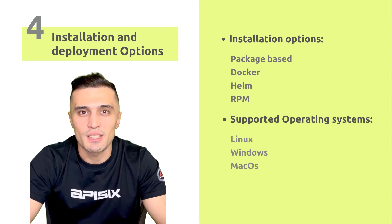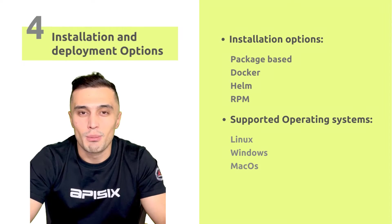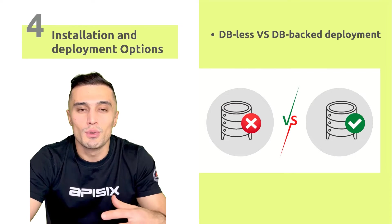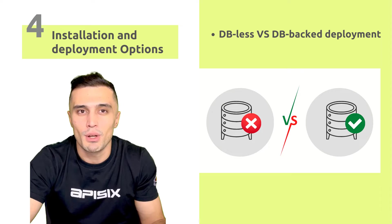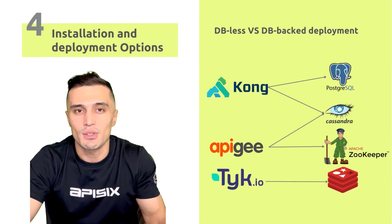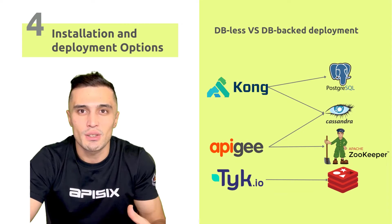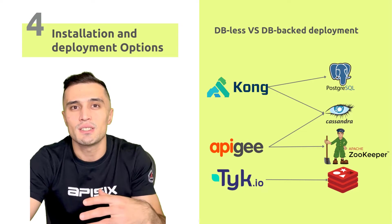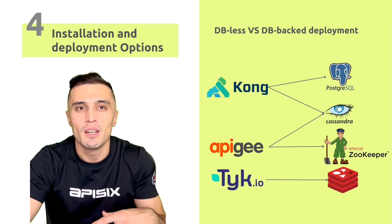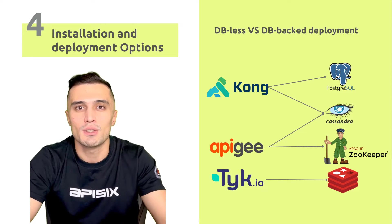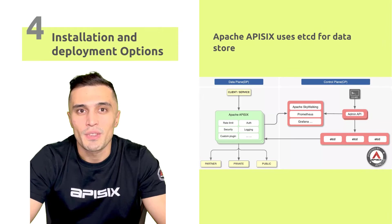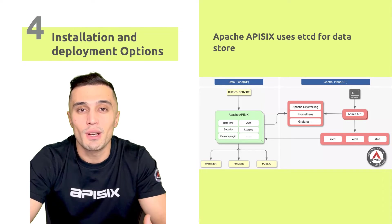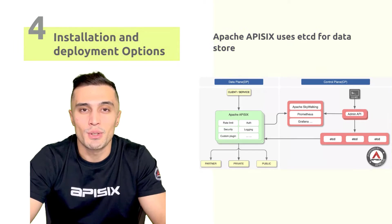You can also review deployment complexity, such as DB-less versus database-backed deployments. For example, Kong requires running Cassandra or Postgres; Apigee requires Cassandra, ZooKeeper, and Postgres; while solutions like Express Gateway and Tyk only require Redis. In contrast, APISIX uses etcd as its data store, storing and managing routing and plugin-related configurations inside etcd, which is very fast.